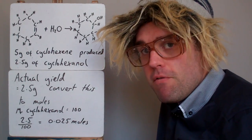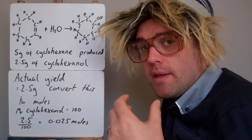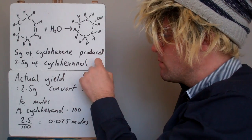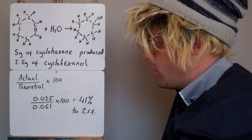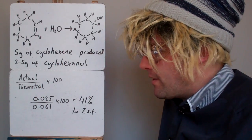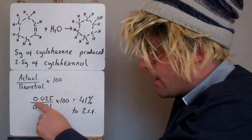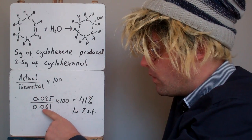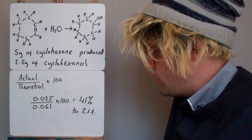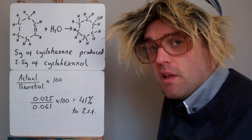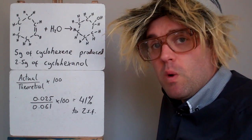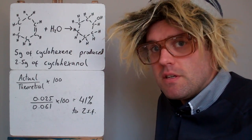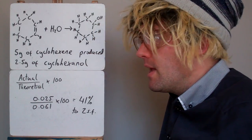Now we've got both our actual and theoretical yields in moles, we can put them back into the original equation. Actual over theoretical times by 100 — that's 0.025 divided by 0.061 times by 100 — and to two significant figures, that's 41%. You can see that our reaction here is not very efficient. Only 41% of the starting material is getting converted into products. So if you're running this as a business, you might want to look at improving the processes in the reaction.